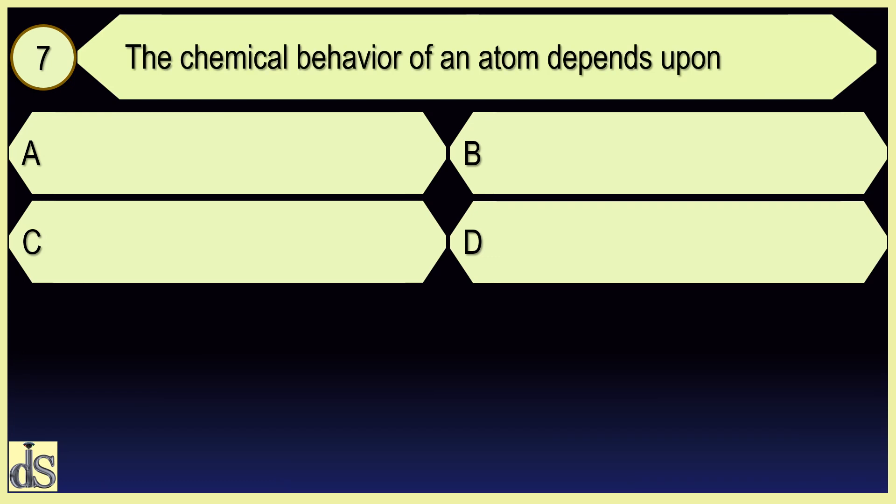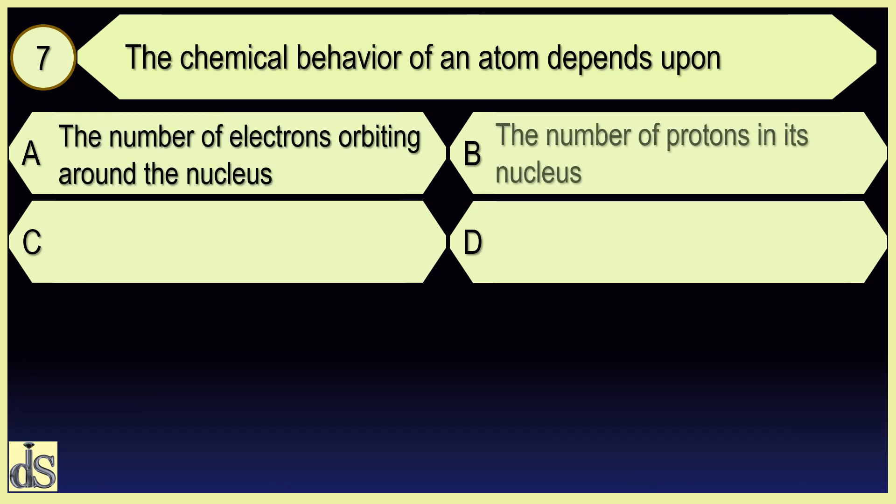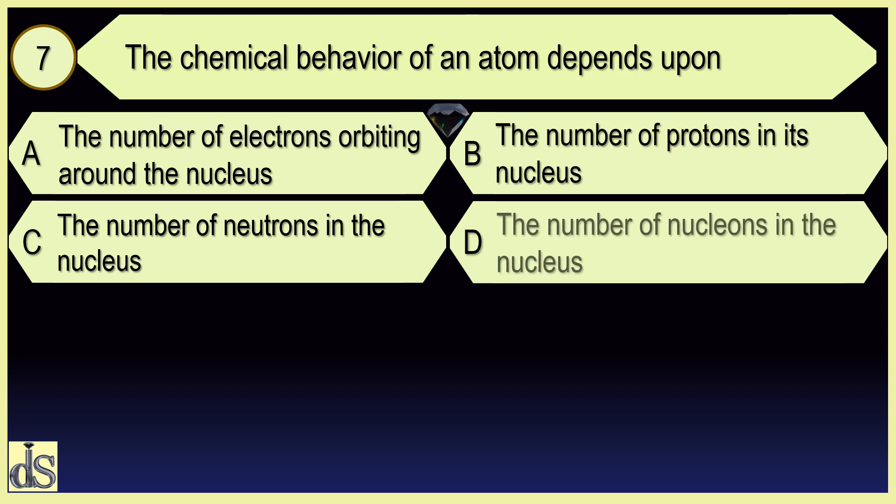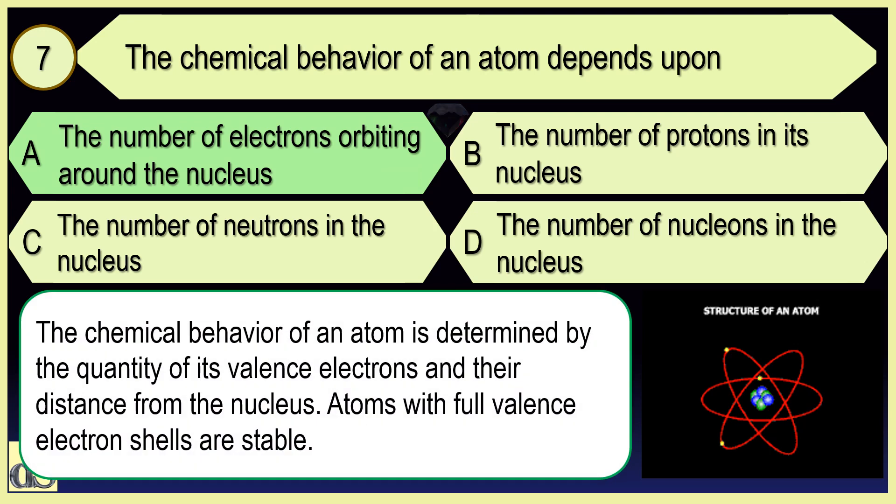The chemical behaviour of an atom depends upon the number of electrons orbiting around the nucleus.